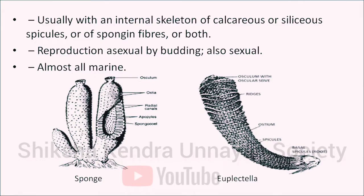Phylum Porifera, which includes sponges, has several characteristics. Its body has many pores, canals or chambers through which water flows — this is called the canal system. It has a large aperture called the osculum at the upper end, and its body encloses a large cavity called the spongocoel. It has no organs, movable parts or appendages. Different kinds of cells perform different functions. Usually it has an internal skeleton of calcareous or siliceous spicules or spongin fibers or both. Reproduction is asexual by budding, and when sexual reproduction takes place it is almost entirely in marine animals. Examples: Sycon, Euplectella, Euspongia.